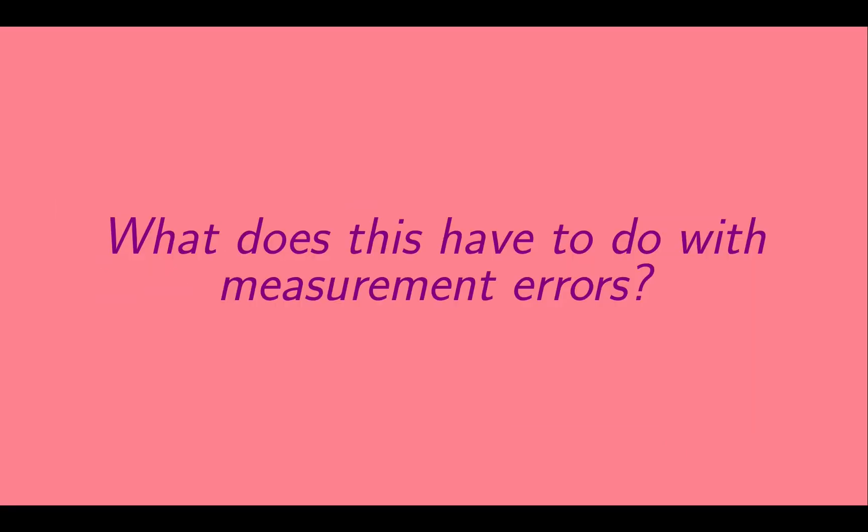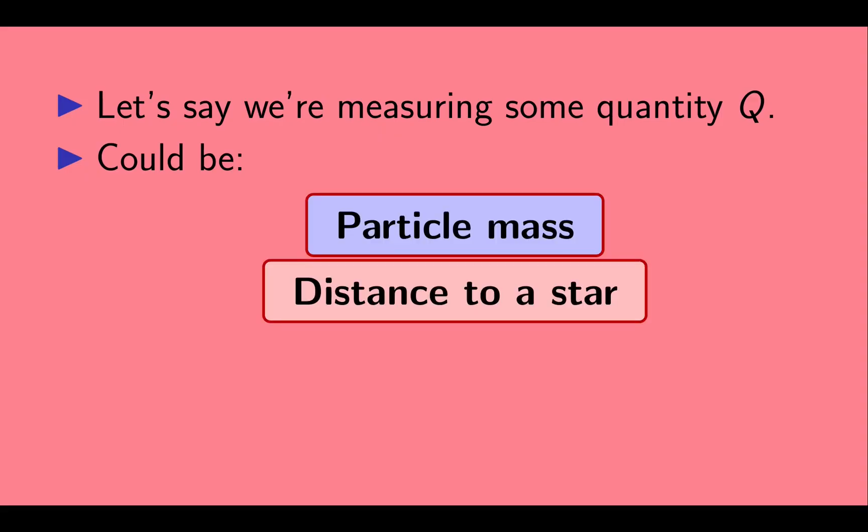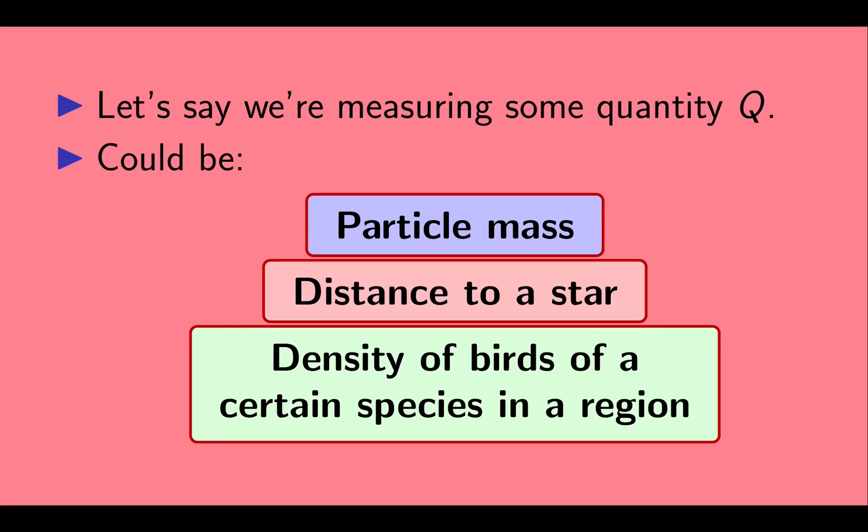So what does this have to do with measurement errors? Let's say we're measuring some quantity q. This could be something like the mass of a fundamental particle, the distance to a star, the density of birds of a certain species in a certain region, etc.